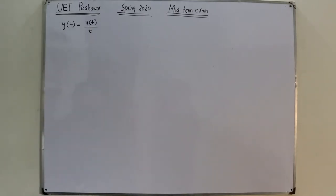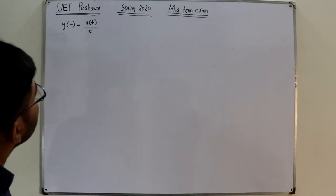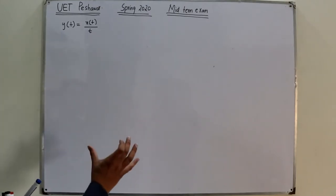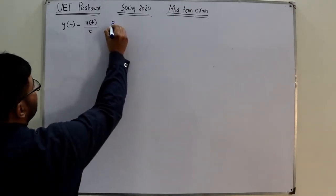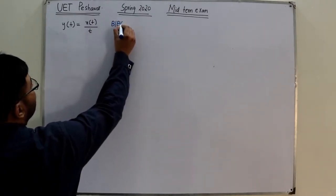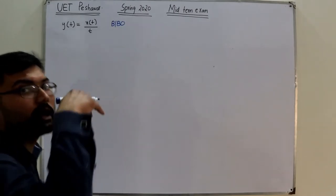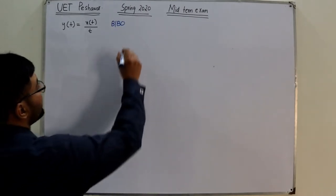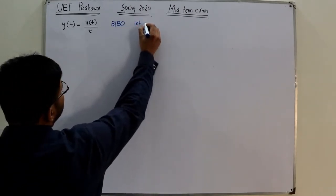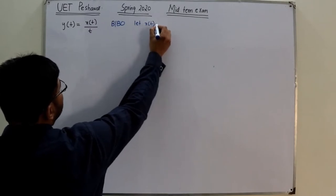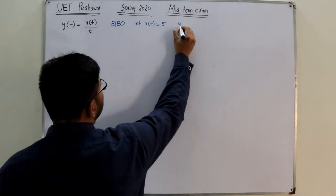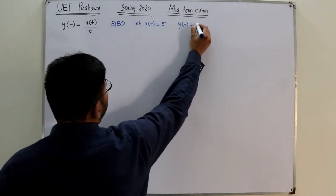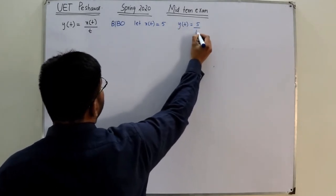We know that for a system to be stable it must satisfy the BIBO criteria — for a bounded input it should have a bounded output. So let x(t) be a bounded input, say a DC value of 5. Then y(t) would come out to be 5 divided by t.